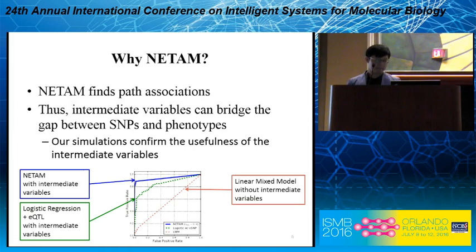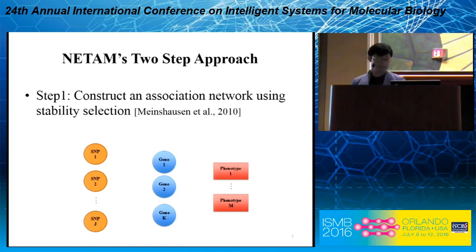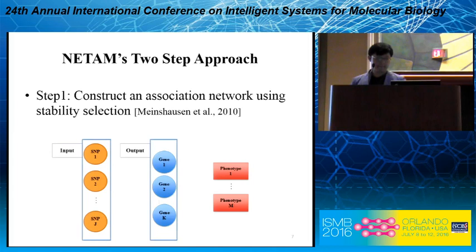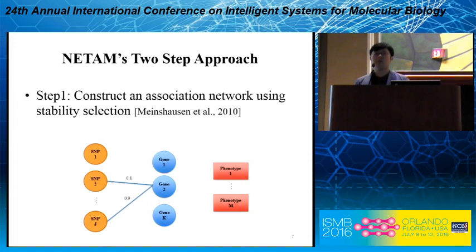NITAM takes a two-step approach. In the first step, we construct an association network using stability selection. You may use a single-SNP approach for finding associations, but we claim that stability selection performs better than single-SNP analysis because it considers all SNPs simultaneously when finding associations. We consider the set of SNPs as input and the set of genes as output, and then assign weights to edges using stability selection score.